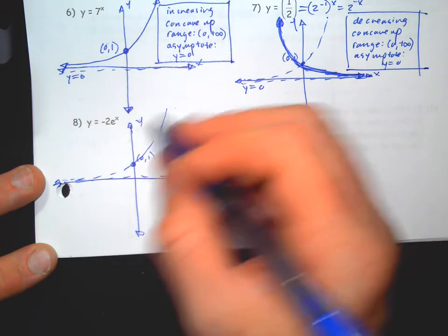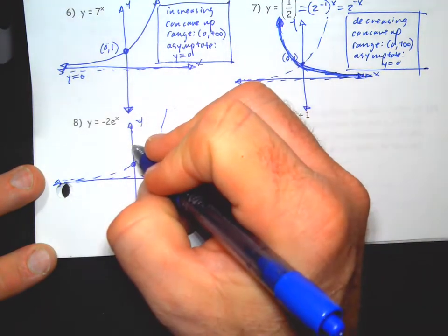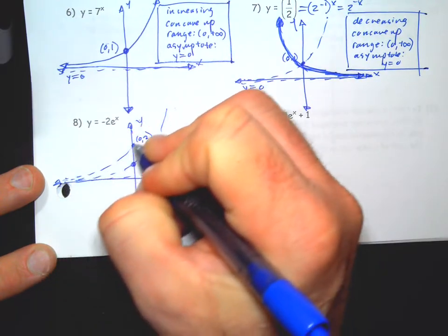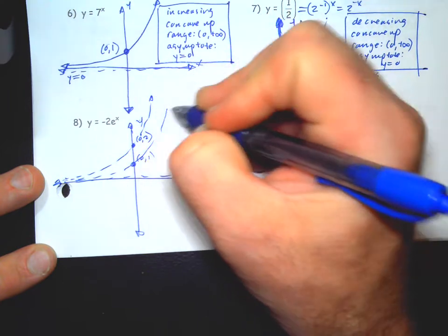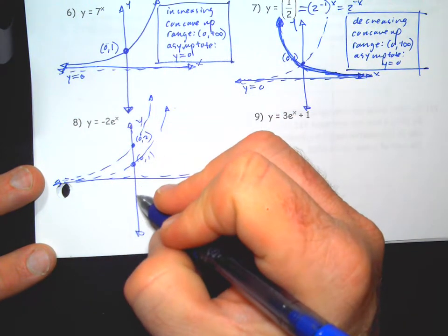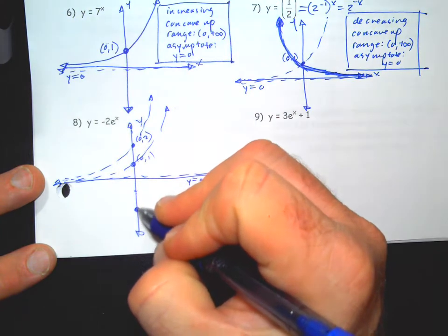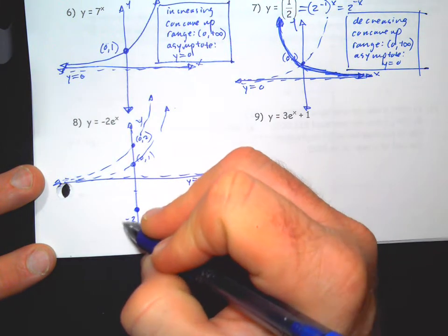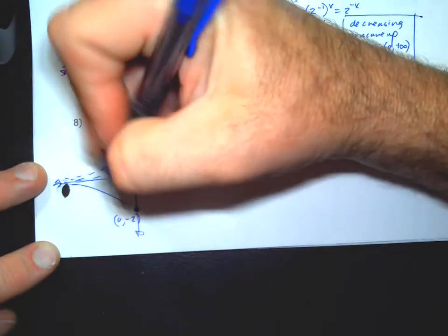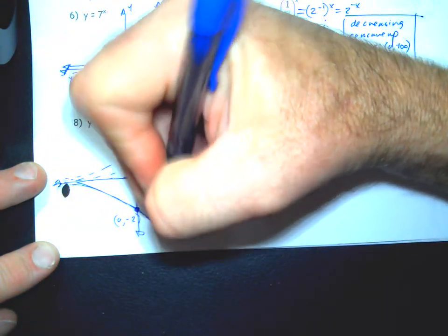You do the two and then the negative, or you do the negative two together. If you do the two, it makes the y values double. That's the main y value, and then the negative flips it. So that's going to be your final graph.